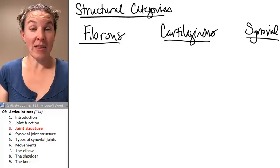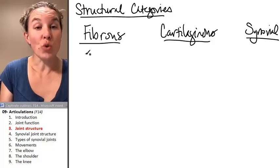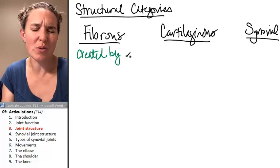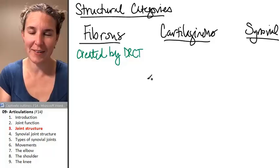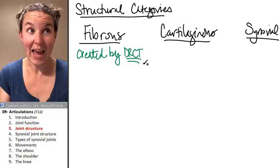There are multiple types of fibrous joints. What unites all fibrous joints is that they are connections between bones that are created by — or fused, or linked by — dense, regular connective tissue. All of these joints have dense, regular connective tissue spanning two bones and creating a connection between those two bones.